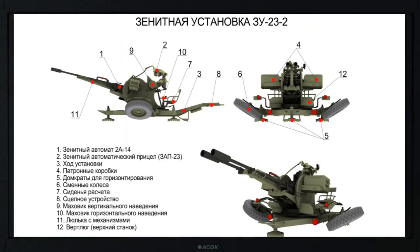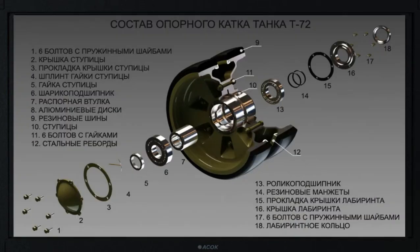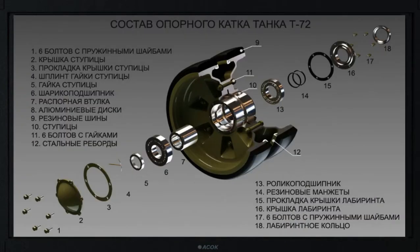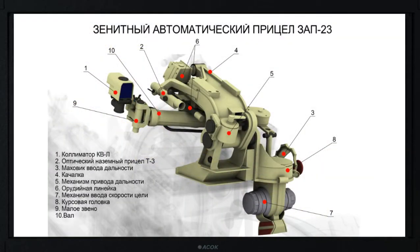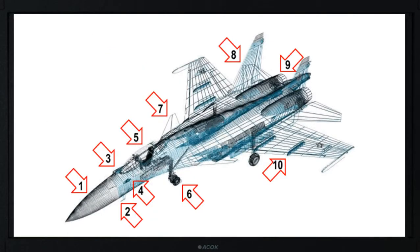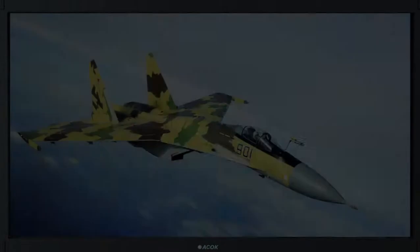Interactive posters represent two-dimensional images of the object with dedicated active zones and allow to study the characteristics of the systems, aggregates, units and parts.